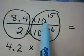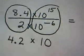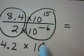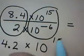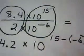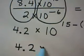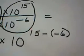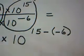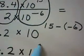And remember when we're dividing and the bases are the same, you leave the base alone and you subtract exponents, starting with the top. So we have 15 minus a negative 6, and it's very important. So we have 4.2 times 10 to the, and 15 minus a negative 6, minus a minus becomes a plus. 15 plus 6 is 21.